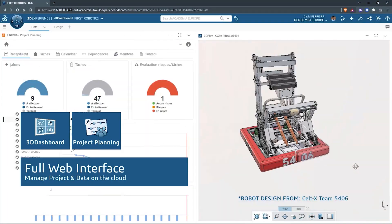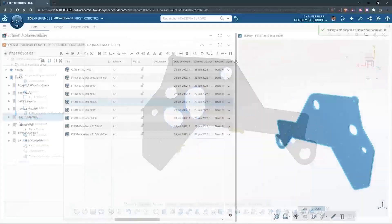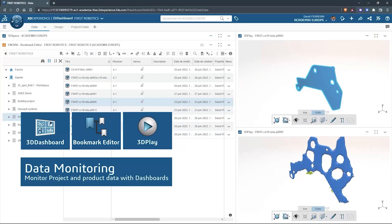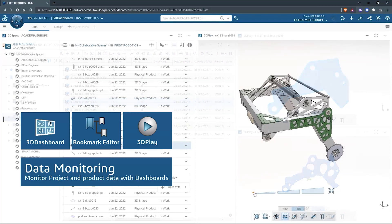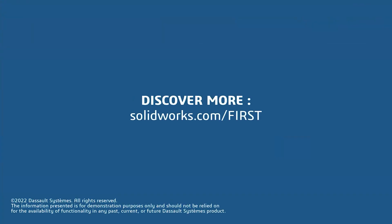SolidWorks is free for First teams. Over 80% of US engineering schools and 370,000 plus companies use SolidWorks to design great products. SolidWorks can help you design a great robot on desktop or on the cloud. Go to SolidWorks.com/First to register your team.